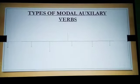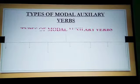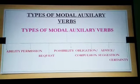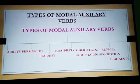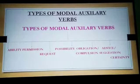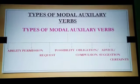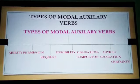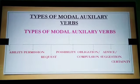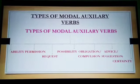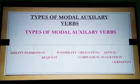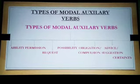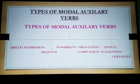Now let us see the different types of modal auxiliary verbs. The types are: ability, permission, request, possibility, obligation or compulsion, advice or suggestion, and certainty. We will learn all seven types in detail.